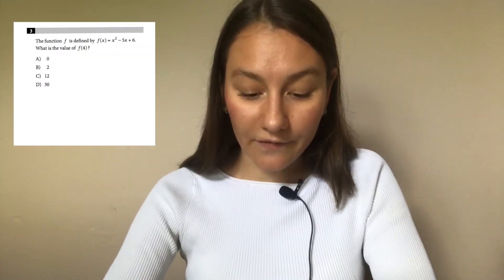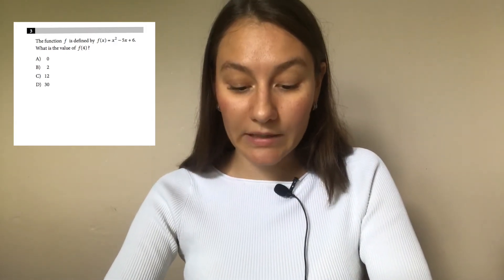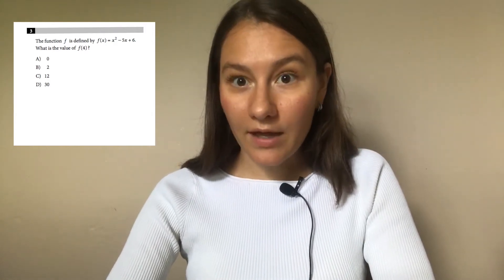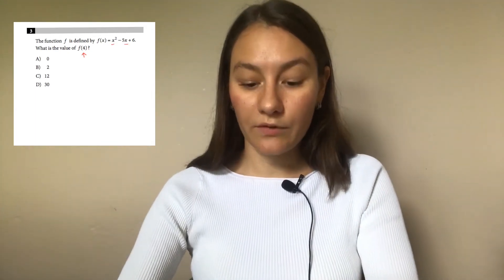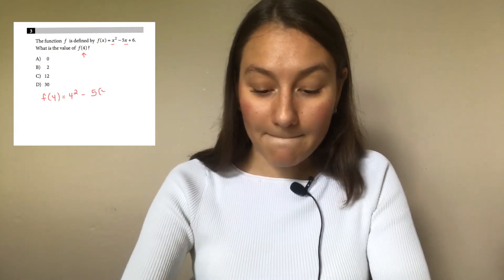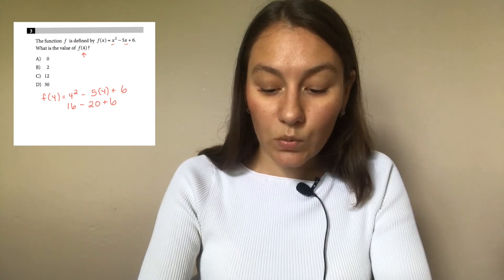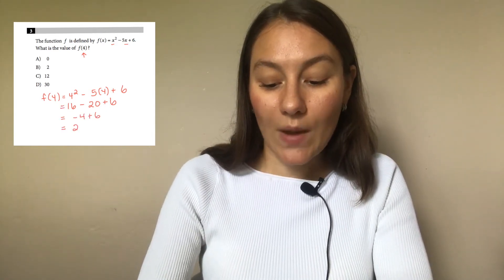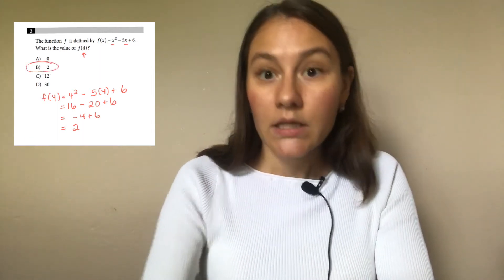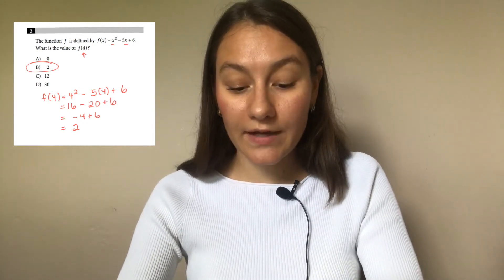Let's do an actual SAT practice problem. The function f is defined by f of x equals x squared minus 5x plus 6. What is the value of f of 4? My plug-in value is 4, so everywhere I have an x I replace it with 4. I recommend always using parentheses. We get 4 squared minus 5 times 4 plus 6. 4 squared is 16, minus 20 plus 6, which simplifies to negative 4 plus 6. So f of 4 equals 2. The answer is B.